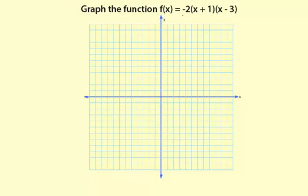Graph the function f(x) equals negative 2 times the quantity x plus 1 times x minus 3. Looking at this function, I can see it's in factored form. And the nice thing about this, the factors tell me what the zeros are of the function or the x-intercepts.